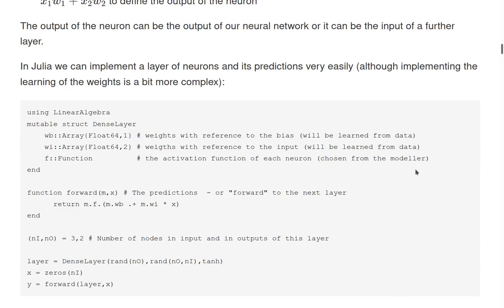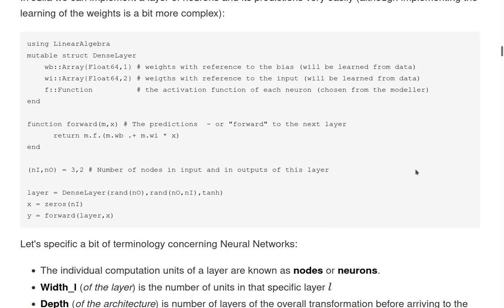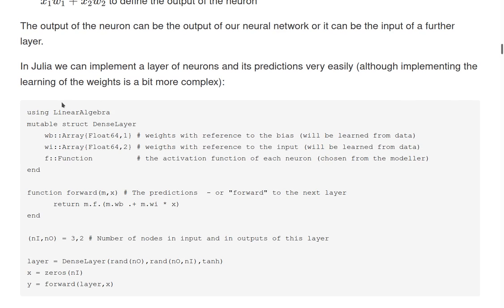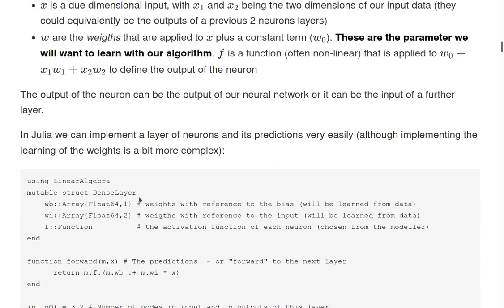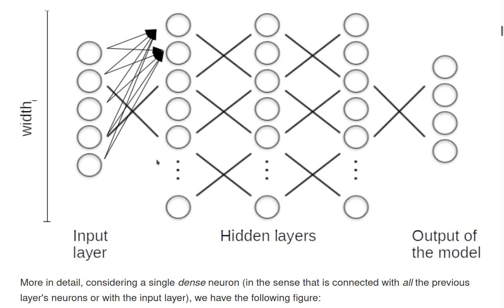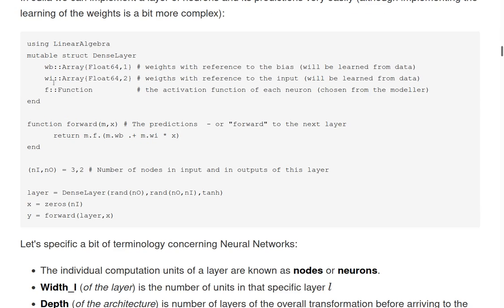We can implement this easily in Julia. So we just make a structure dense layer where we have two weights, weights with respect to the bias. It's a vector because here we are not making a single neuron, but we are making a full layer. So this is why we are implementing here the layer. So we have an array of bias.